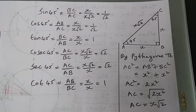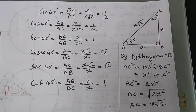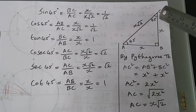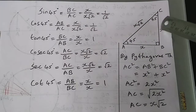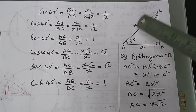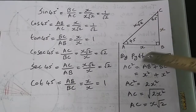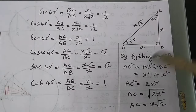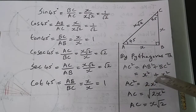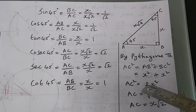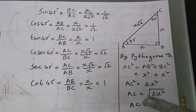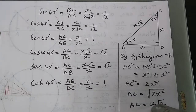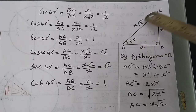Today I am going to find all trigonometric values for 45 degrees. For that, let us take an isosceles right angle triangle with equal sides of length X, so the other two angles will be 45 degrees each. By Pythagoras theorem, AC² = AB² + BC² = X² + X² = 2X², so AC = X√2. We got the hypotenuse AC as X√2.